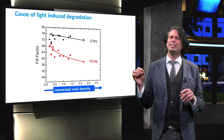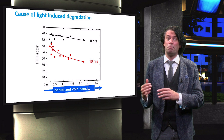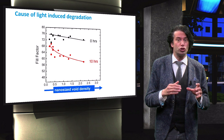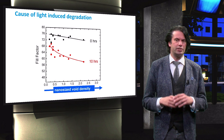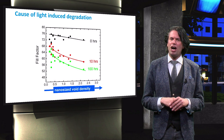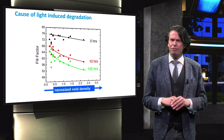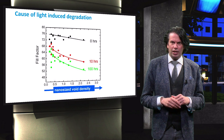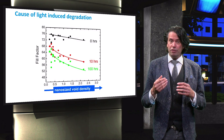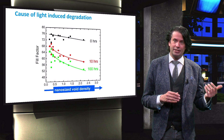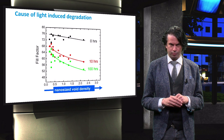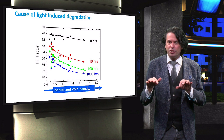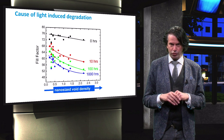The fill factor significantly drops. It can be clearly seen that the fill factor drops more for amorphous silicon with many voids, whereas the fill factor for amorphous silicon with fewer nanosite voids shows only a moderate decrease. After 100 hours of light soaking the fill factor further decreases, but not that drastically anymore. This corresponds to the additional light induced defects generated between 10 and 100 hours of light soaking. After 1000 hours, the fill factor has moderately further decreased to a stabilized value.